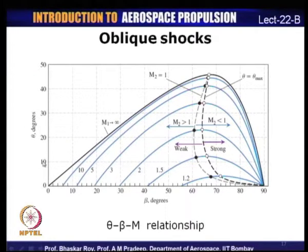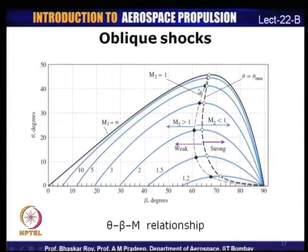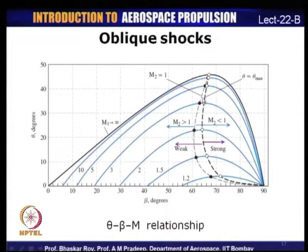For example, taking a deflection angle θ of 10 degrees and an upstream Mach number of 2, it is possible to get two different wave angles — one around 40 degrees and another which is more than double that angle. Depending on which wave angle applies, the shock could either be a weak shock or a strong shock. Correspondingly, the Mach number can be supersonic, subsonic, or sonic. Joining all the points where Mach number = 1 gives a constant sonic Mach number line (shown dotted); to the left we have supersonic flow and to the right subsonic flow.